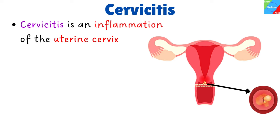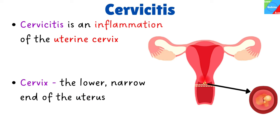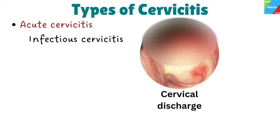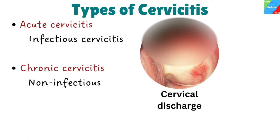Cervicitis is an inflammation of the uterine cervix, which is the lower, narrow end of the uterus that opens into the vagina. There are two types of cervicitis. The first type is acute cervicitis, also known as infectious cervicitis, which is usually caused by infection. The second type is chronic cervicitis, which is the non-infectious type, usually due to irritation.